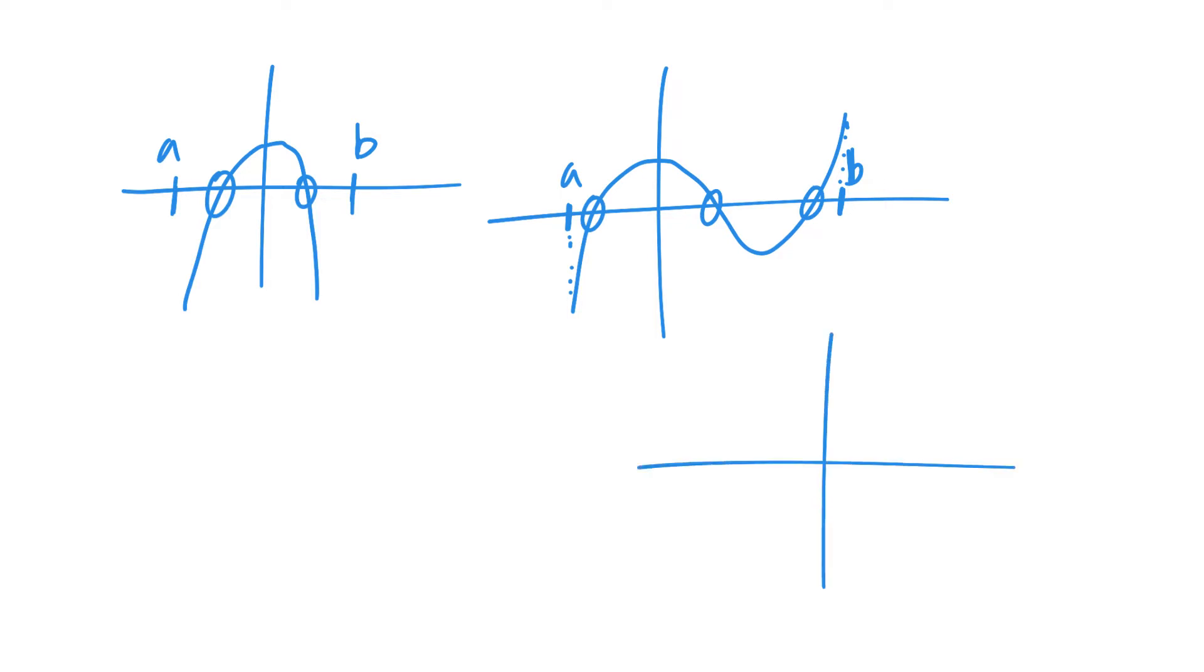And then, of course, there is a reciprocal graph, something like this, where I could pick values a and b. This a is positive, b is negative. I think there's a change in sign between them, but there is no root between them.